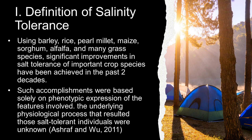Using barley, rice, pearl millet, maize, sorghum, alfalfa, and a variety of grass species, significant improvement in salt tolerance of important crop species have been achieved in the last two decades. Such accomplishments were based solely on phenotypic expression of the features in question. The underlying physiological processes that resulted in those salt-tolerant individuals are unknown.